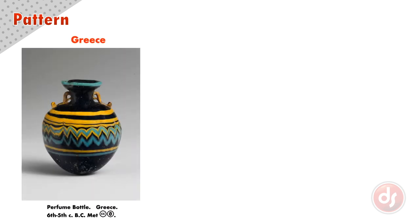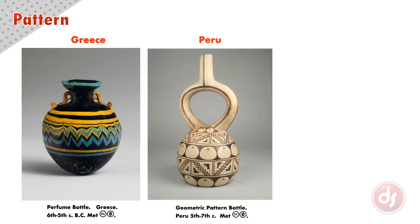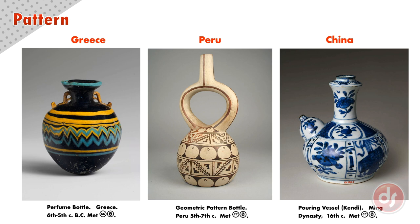This Greek perfume jar uses bands of lines and zigzag motifs with contrasting colors. This Peruvian bottle uses a motif of complex geometric shapes, and this Chinese porcelain vessel uses flower motifs in cobalt blue — the only color that withstands the high heat of firing porcelain. While many patterns are shared across cultures, we can see how these patterns uniquely describe the cultural aesthetics of the region and the time period they come from.